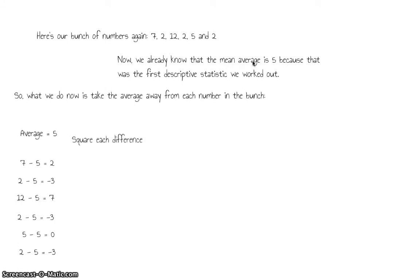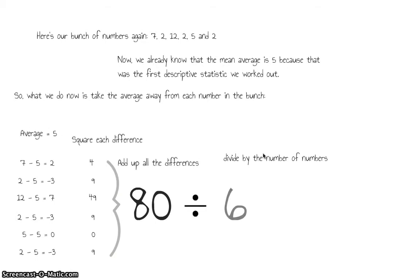Next thing we do is square each of these differences. So 2 squared is 4, minus 3 squared is 9, 7 squared is 49 - quite a large number there - and so on all the way through. Obviously 0 times 0 comes out as 0. Then we add them all up because we're going to work out the average between these differences now. There's the 80 - that's added them all up - and then we divide by the number of numbers that we've got, so divided by the 6 items.